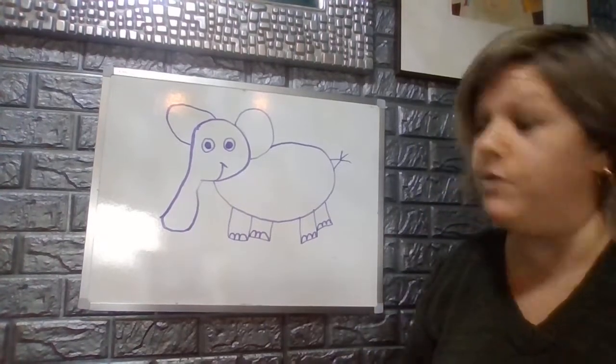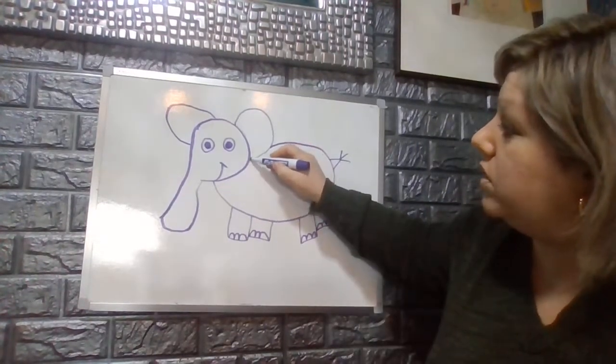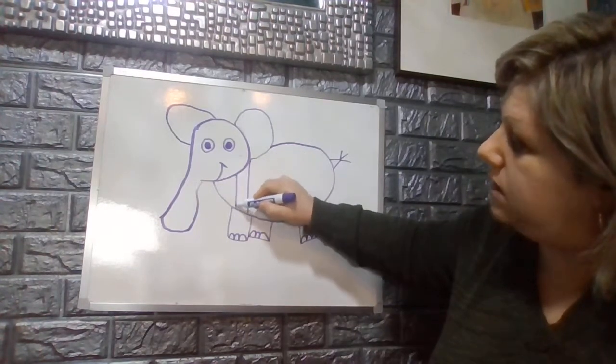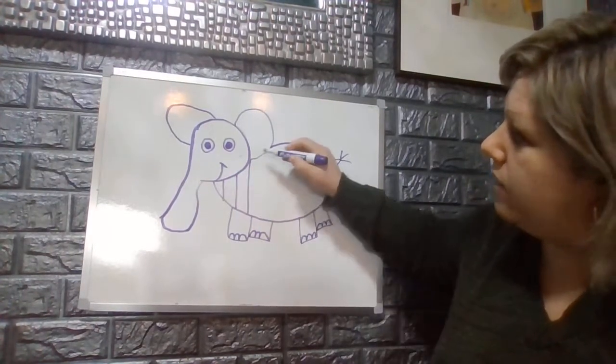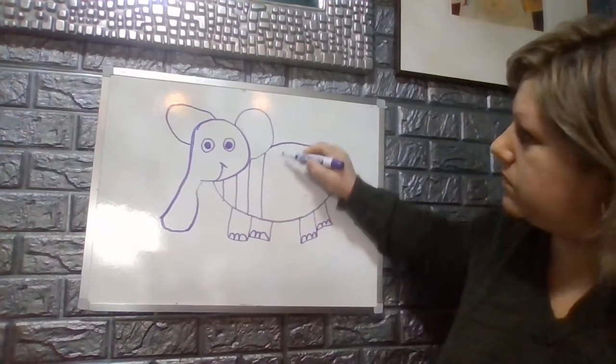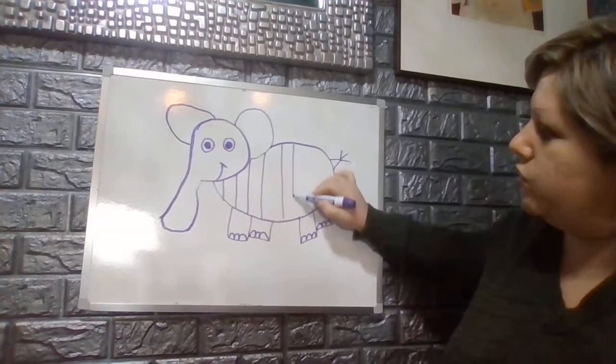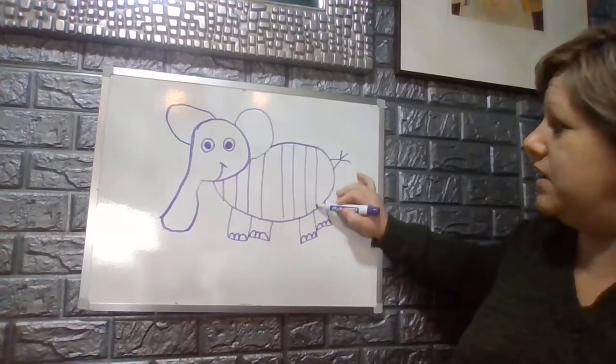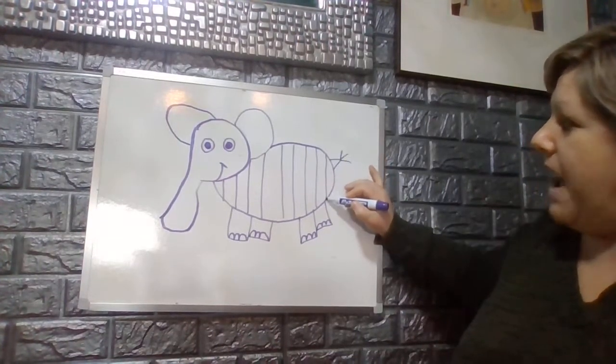So what we're going to use now is we are going to use vertical lines going from the top to the bottom straight lines throughout the elephant's body. You can make them as wide or as narrow as you like. You are the artist. It is your creation, your masterpiece.